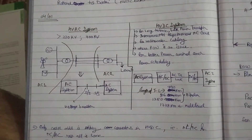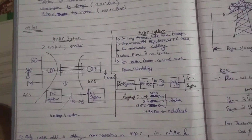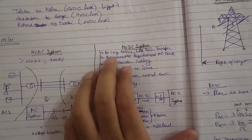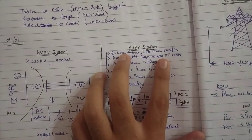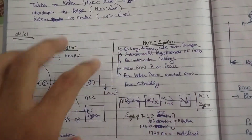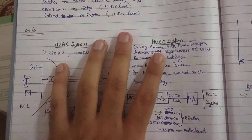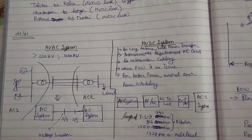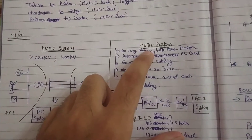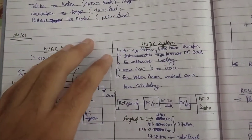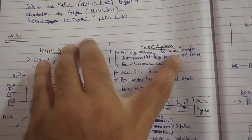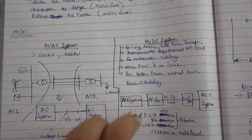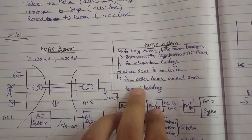After that, I have the HVDC system. Basically, HVDC says that if I have a long-distance transmission or bulk power transfer — that means from one place to another very far place, for example India to Bangladesh, India to Pakistan — we can use HVDC. And for bulk power transfer, if I have underwater cabling, I can use HVDC.